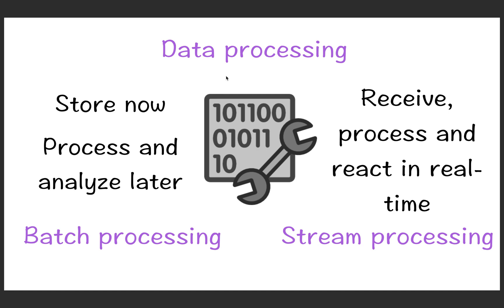There are two kinds of paradigms. One is batch processing and the other is streaming processing. In batch processing, we typically store the data, then process and analyze it later. In streaming processing, we receive, process, and react on a real-time basis.